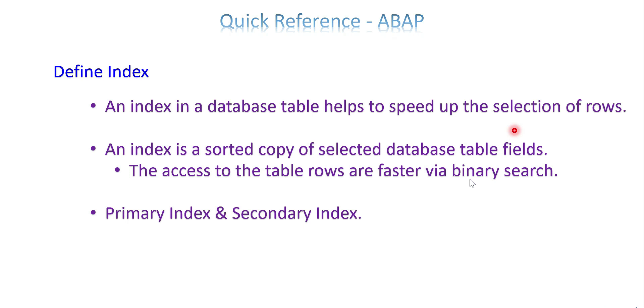Technically, we don't see the index number—indexes are in the form of fields. An index is a sorted copy of selected database table fields. Based on how you define the index, it gets sorted in your database table. For example, if you take MARA, it's always sorted through the material number.